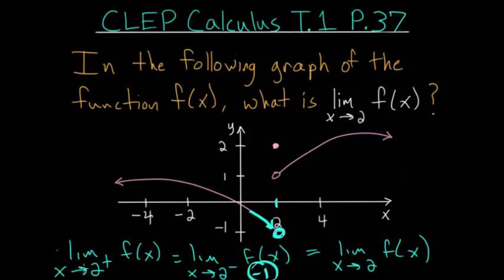But when we're looking at this limit here as x approaches 2 from the right side, we follow along the curve of the function from the right, and we can see that it approaches this value here, which is a value of 1. So this limit is equal to 1.